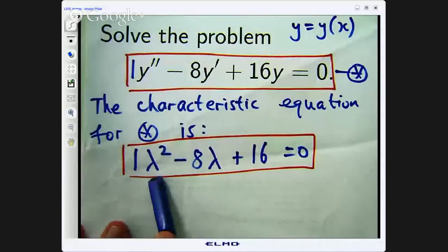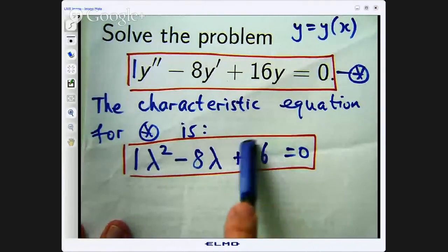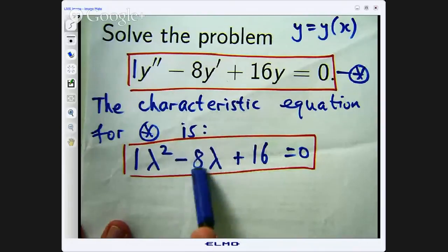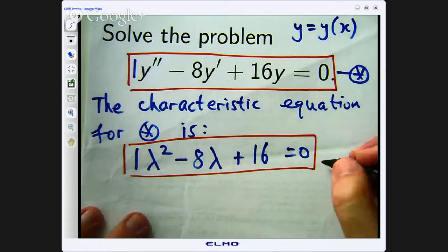Alright, so we have got a coefficient of 1 there. We want two numbers that multiply to give positive 16 and add together to give negative 8. Well, two numbers are going to be negative 4 and negative 4.